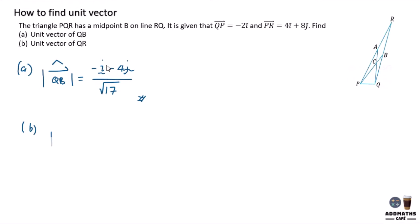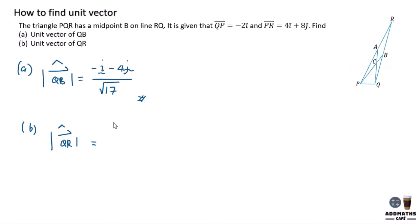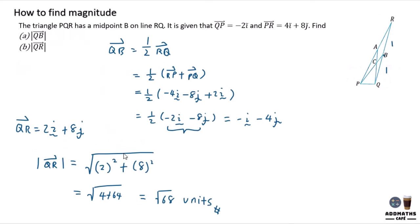Same goes to B. To find unique vector of QR, this is how you write the unique vector of QR. You know that QR is 2I plus 8J. So just 2I plus 8J on the numerator. And on the denominator, it will be 68.